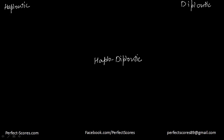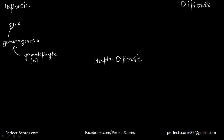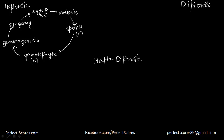Let's start with the haplontic life cycle. You start with a gametophyte, which is always haploid — it contains only half the chromosomes, labeled as n. Through gametogenesis (formation of gametes), gametes are produced. Through syngamy — the fusion of two gametes — you get a diploid zygote (2n). This zygote undergoes meiosis to produce spores of n composition, and those spores further lead back to gametophytes.